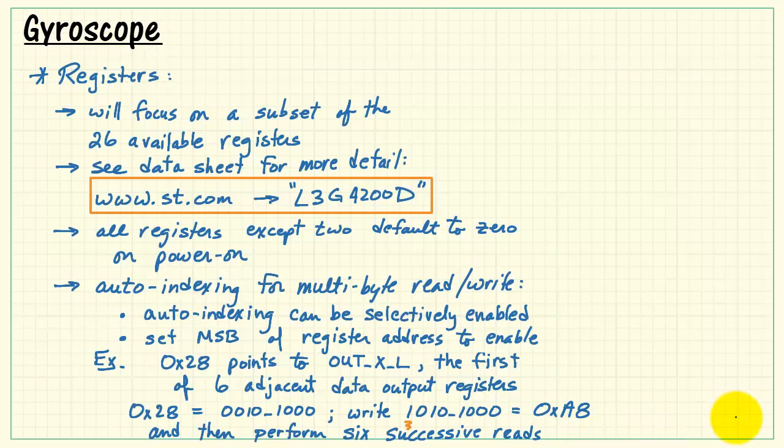That's the value that you would first write as a register address, and then you would perform 6 successive reads. And that, again, is with autoindexing enabled.